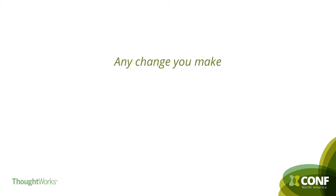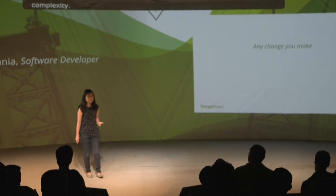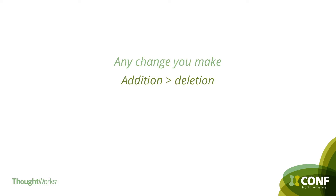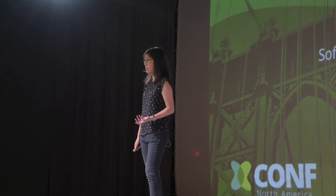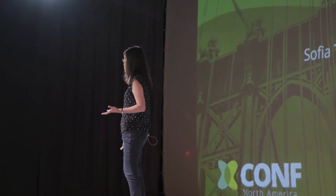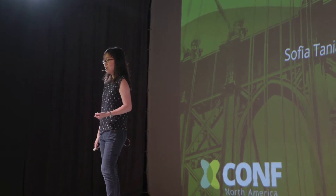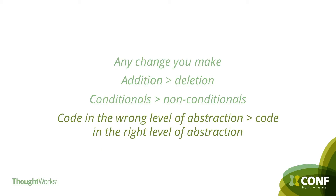Looking at application code alone, any change you make has the potential to increase complexity. But not all change increases complexity in the same way. Adding lines of code introduces more complexity than deleting lines of code, and this applies to adding dependencies as well. Even when adding code, adding conditionals adds more complexity than adding non-conditionals, especially if they're nested. And code in the wrong level of abstraction introduces coupling, which introduces more complexity.